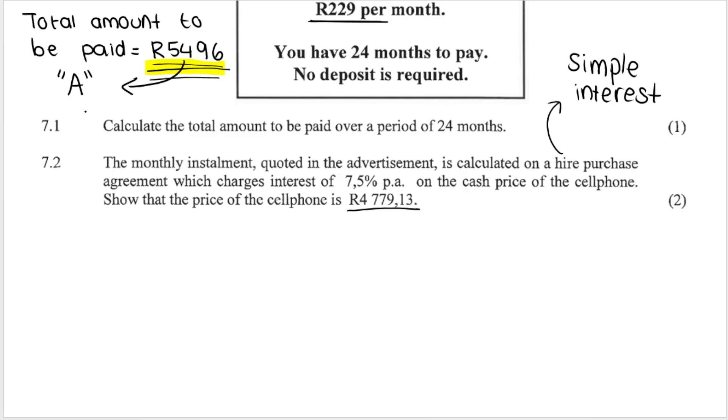So this amount over here includes interest to be paid back on the cell phone. So essentially what we have calculated over here is my A. It is my final or my accumulated amount, including interest. What the question wants me to do is to calculate and therefore prove that the price of the cell phone is this amount over here. They basically want me to calculate P, the starting amount, the initial price of the cell phone without interest being added. So what I'm going to do is I'm going to use the simple interest formula, which looks like this.